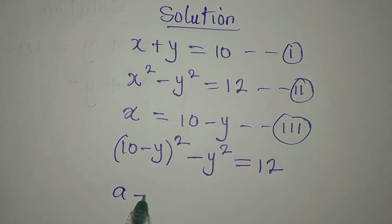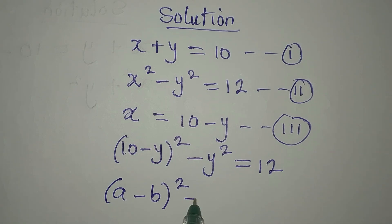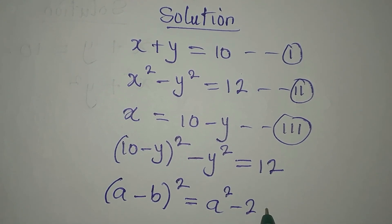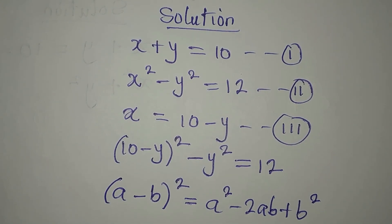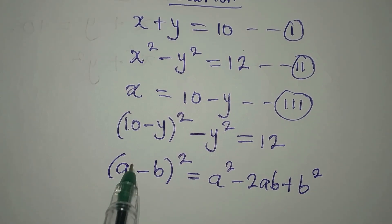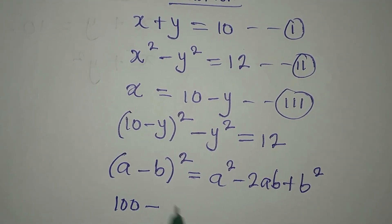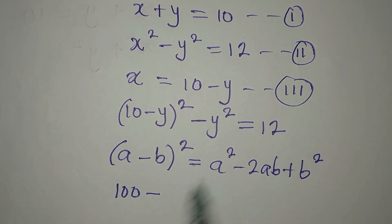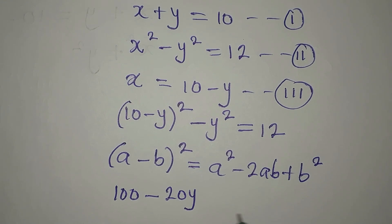Let's look at the expansion. If you have (a minus b) to the power of 2, this gives you a squared minus 2ab plus b squared. So a squared becomes 10 squared, that is 100, minus 2 times a times b, which will be 2 times 10 times y, giving 20y.